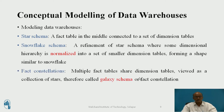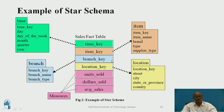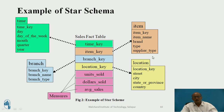The third is fact constellation. In the star schema example, at the center all fields are mentioned. The time key is further subdivided into time key, day, day of the week, month, quarter, and year. The branch key is divided into branch key, branch name, and branch type. The item key is divided into item key, item name, brand, type, and supplier. Similarly for location. This shows that fields are further divided into attributes.